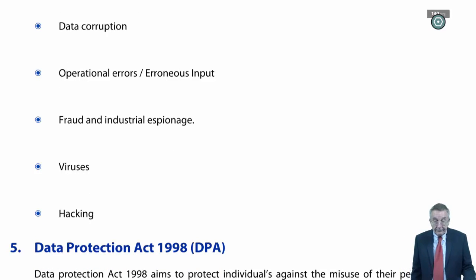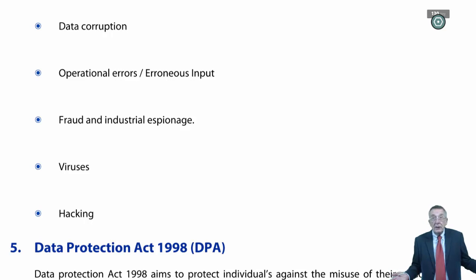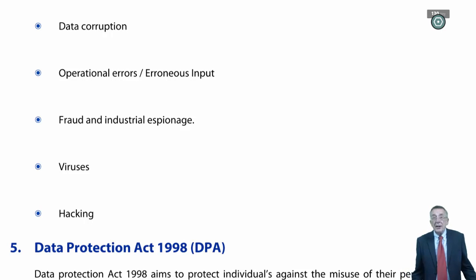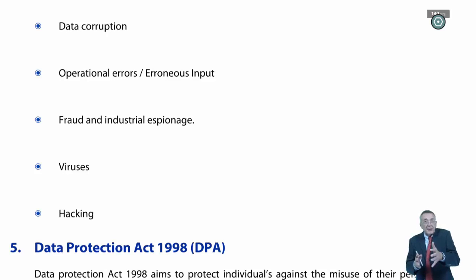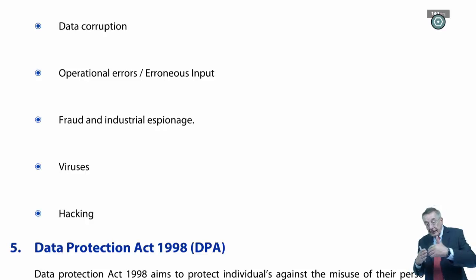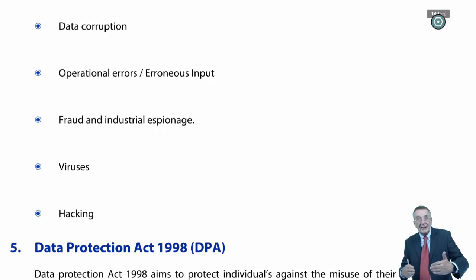Data corruption — faults in all sorts of ways can cause the data to be corrupted and damaged. The obvious solution is we should keep regular backups, and not just one set of backups — have two or three sets. Because we may not find out data has been corrupted for a few days. And if you've only got one backup taken yesterday, that backup may be corrupted as well.